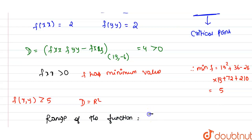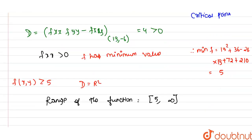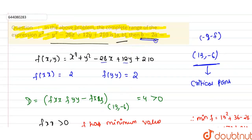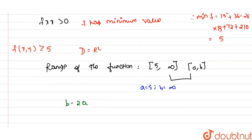The range is [5, ∞), and in our question the range is given as (a, b). Comparing, a = 5 and b = ∞. We need to find b - 2a = ∞ - 2(5) = ∞ - 10 = ∞.